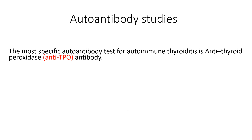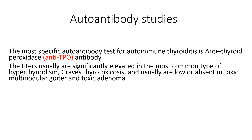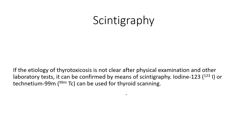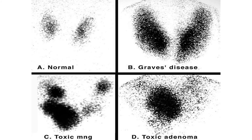Autoantibody studies: the most specific test for autoimmune thyroiditis is anti-thyroid peroxidase (anti-TPO) antibodies, which are usually significantly elevated in Graves thyrotoxicosis but low or absent in toxic multinodular goiter and toxic adenoma. Thyroid stimulating immunoglobulin (TSI) levels, if elevated, help establish the diagnosis of Graves disease. Circulating antithyroglobulin antibodies are also present. If the etiology remains unclear, scintigraphy using iodine or technetium confirms the diagnosis.